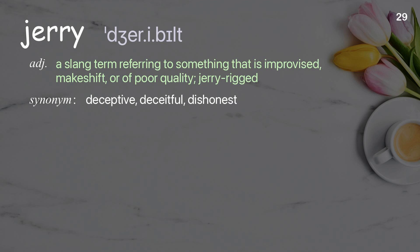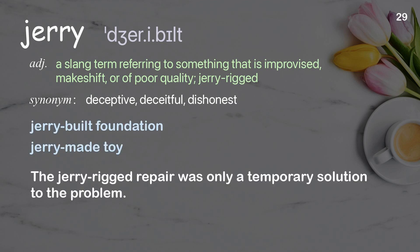Jerry: a slang term referring to something that is improvised, makeshift, or of poor quality; jerry-rigged. Examples: jerry-built foundation, jerry-made toy. The jerry-rigged repair was only a temporary solution to the problem.